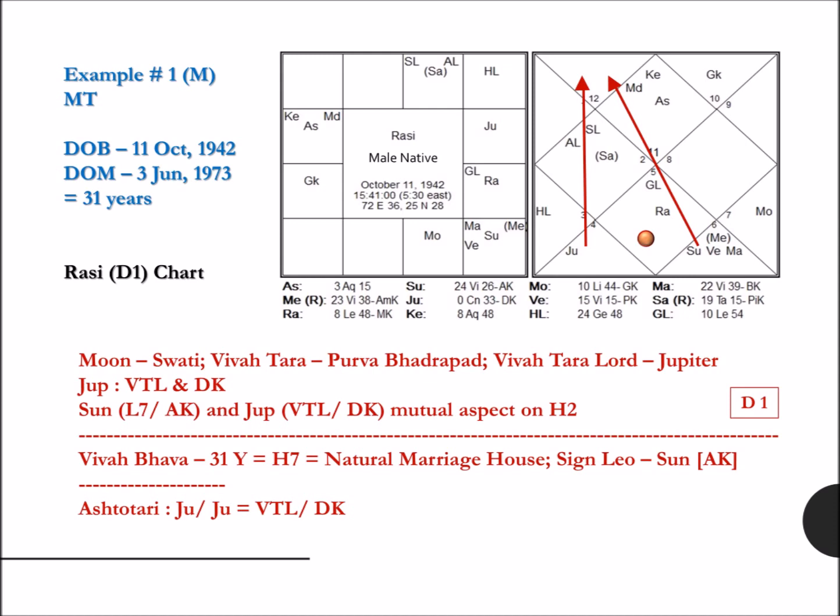Now to start with the examples. First chart, a male native. Moon is in Swati Nakshatra and the Vivatara comes to Purva Bhadrapada, Lord Jupiter — the VTL, Vivatara Lord. This Jupiter is also Darakarka. The Seventh Lord Sun and Jupiter, BTL, both are having aspect on the second house, which can be known as the cause of marriage. So marriage yoga is confirmed.